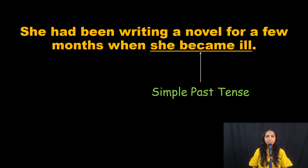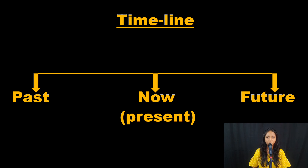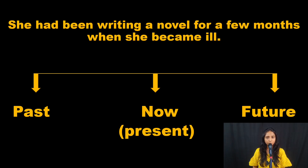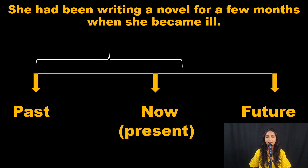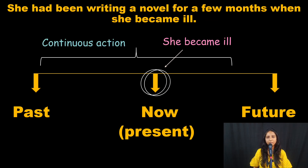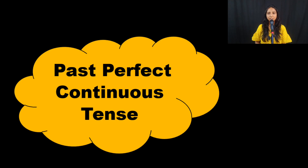Now we have gotten some clarity. Let's look at the past perfect continuous tense on our timeline. This is our timeline — the past, the present, and the future. Let's show the second sentence on the timeline: 'She had been writing a novel for a few months when she became ill.' She started in the past and it is a continuous action for a few months — writing and writing. But another action took place: she became ill. So when an action starts in the past, continues for some time, and is in progress before another action — that is our past perfect continuous tense.